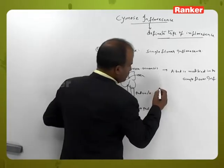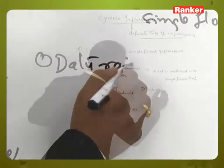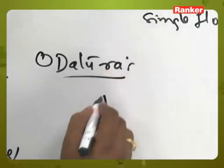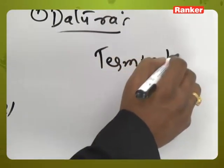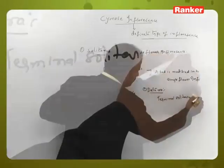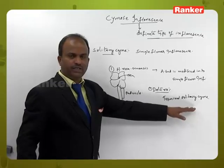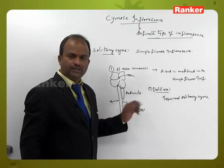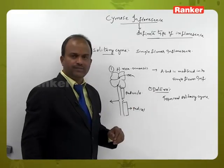Another example is Datura flower. In Datura, terminal solitary cyme can be seen. In Hibiscus rosa sinensis, axillary solitary cyme can be seen.